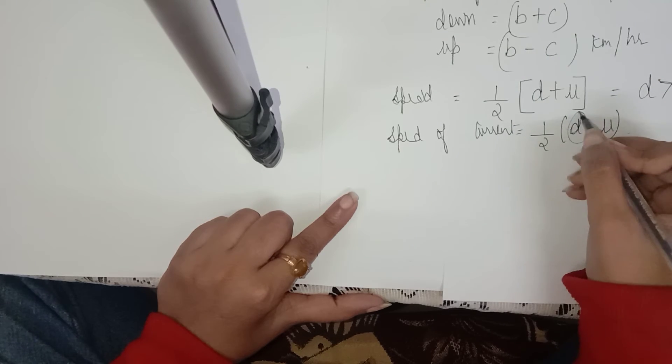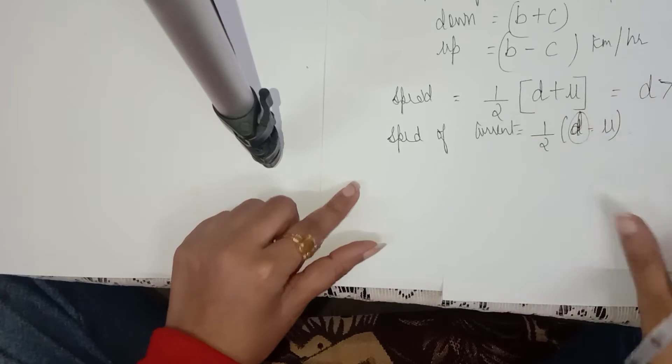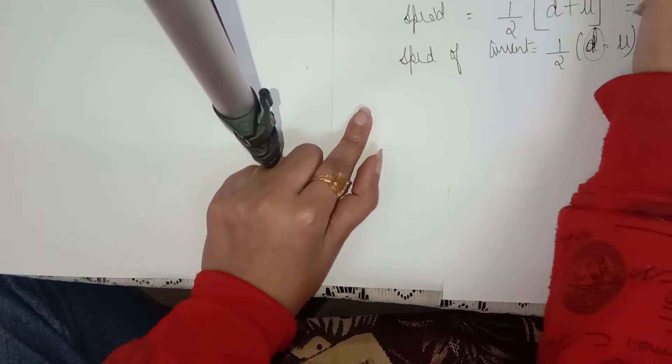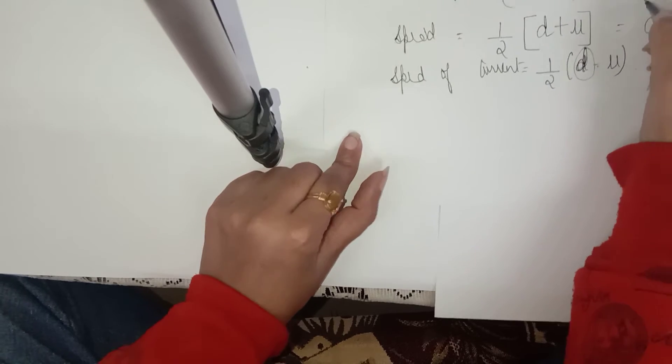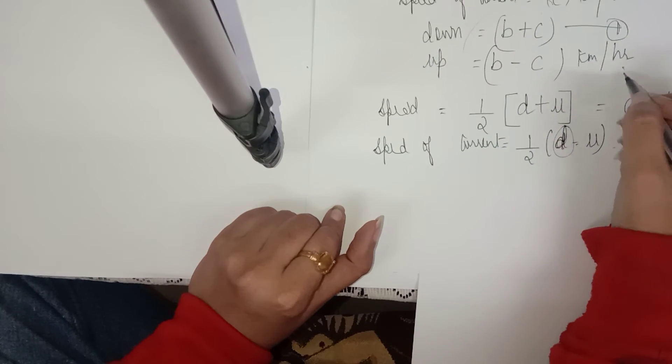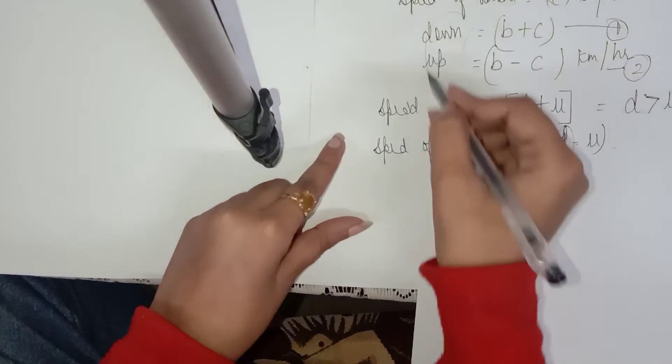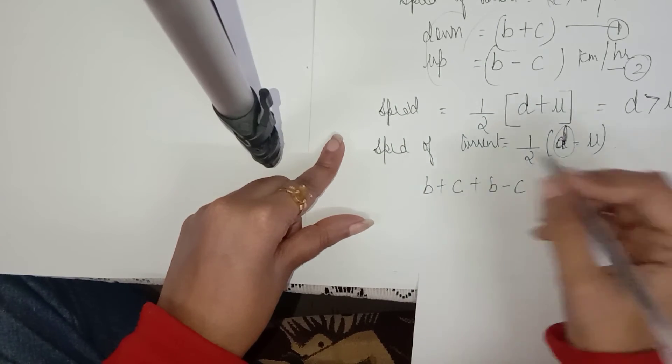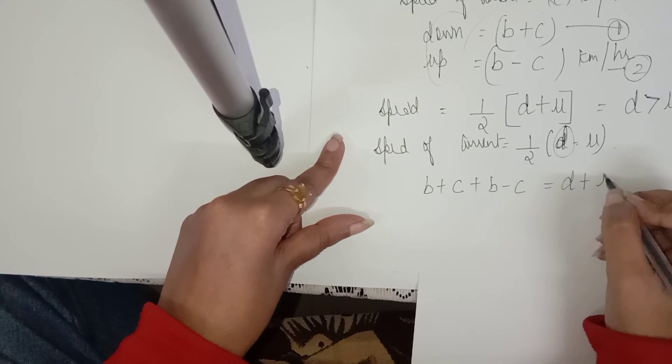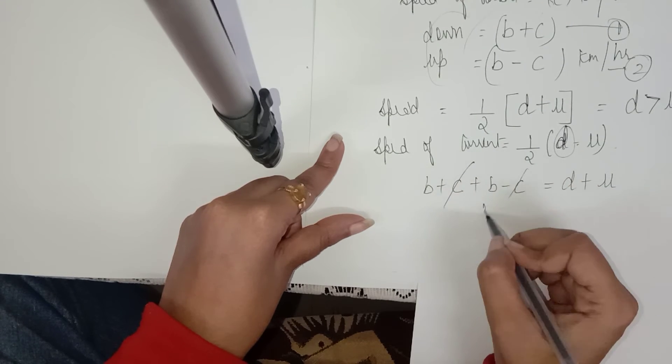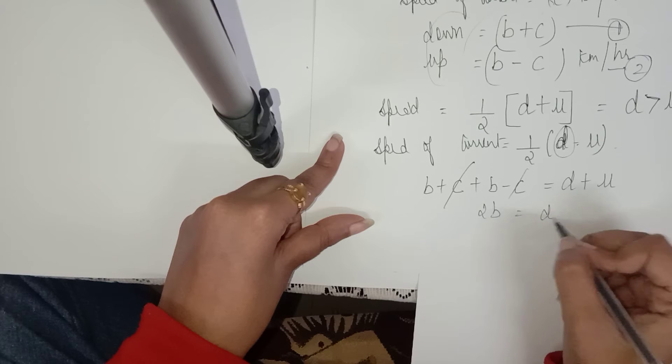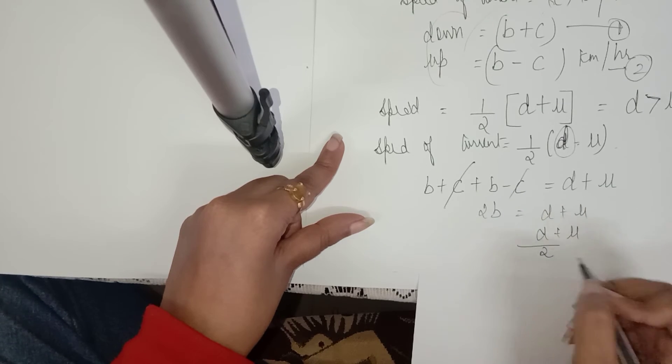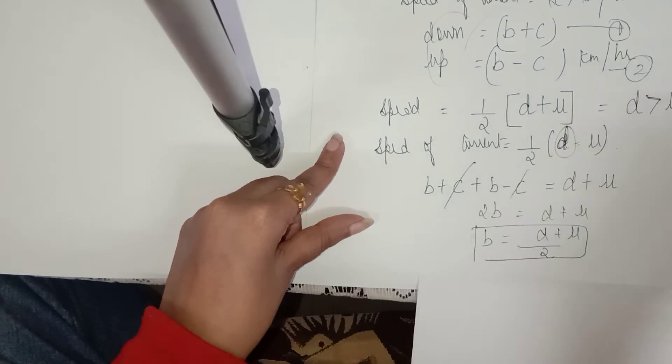That's why we take D first, then U. Now we calculate the formula. This is the first equation, and this is the second equation. Then add both equations: B plus C plus B minus C equals downstream plus upstream. Now cancel to get 2B, which means D plus U. So D plus U by 2, that is the speed of boat in still water.